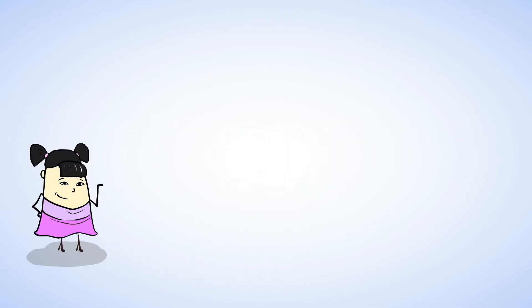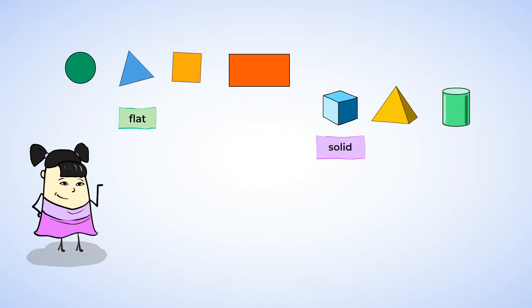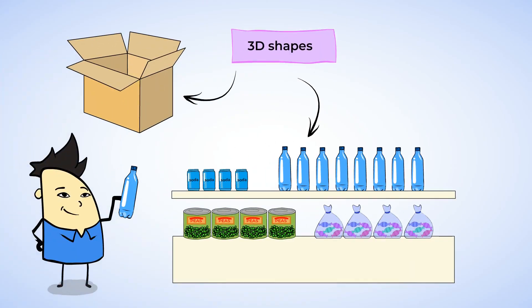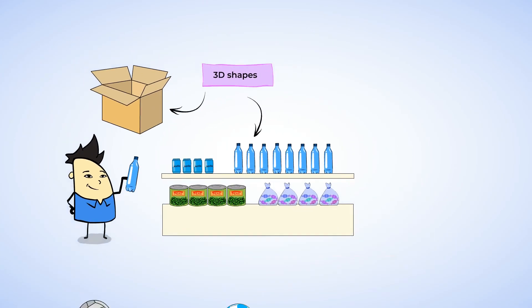Amazing job today. We explored lots of different types of shapes. We learned that some shapes are flat. And some shapes are solid. Flat shapes are called two-dimensional or 2D shapes. And solid shapes are called three-dimensional or 3D shapes. You can find lots of 3D shapes in your home or in your neighborhood. Have fun exploring, my mighty friend. And I'll see you in our next video.